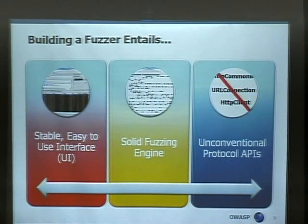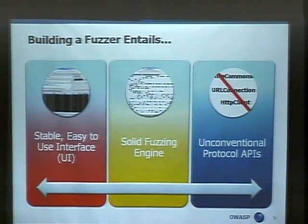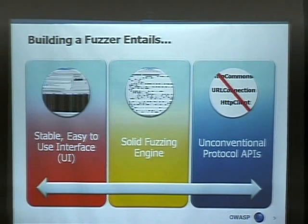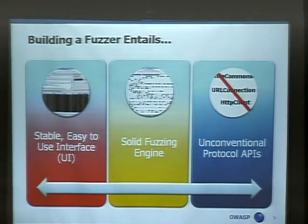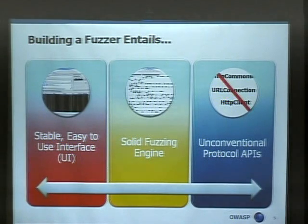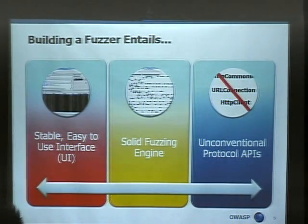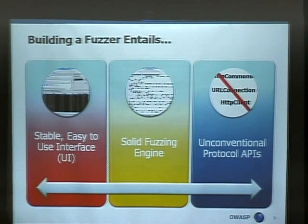If you were to build a fuzzer today, in my opinion, you would need three things. You would need a stable and easy-to-use user interface — this is why most fuzzing tools still use command line, as it is the most stable user interface. You need a solid fuzzing engine, and a lot of work has gone into how to define and group together the payloads into meaningful categories. You also need to address the issue of potentially breaking the protocol specification through your fuzzing requests — for example, in HTTP you can't actually send HTTP/A, as that's an invalid version number and quite often the APIs don't allow you to do that.